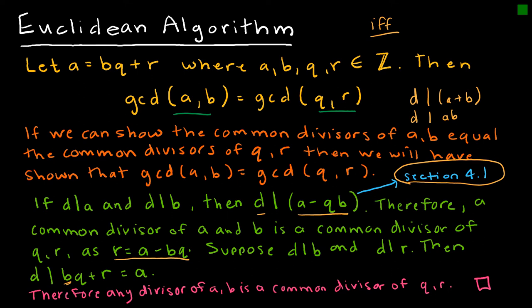So therefore, any divisor of A and B is a common divisor of QR, and therefore, the greatest of those divisors would also be equal.